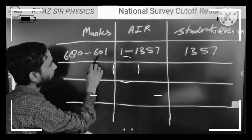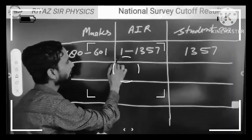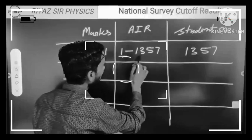This means that your rank should be between 680 to 600 marks from 1 to 1357. Clear.